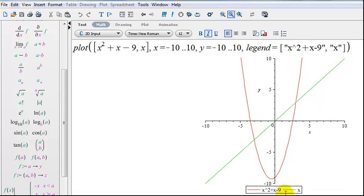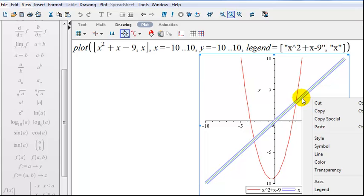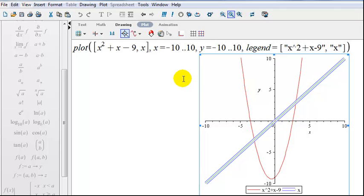So now at the very bottom of our plot, notice that Maple says that the red curve is the quadratic and the green curve is y equals x. Now we can do other fancy things like we can right click on that green line and we could change the line, change the color, and things like that. There's even more that you can do here.